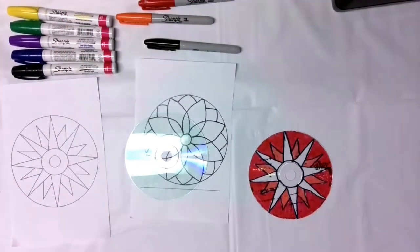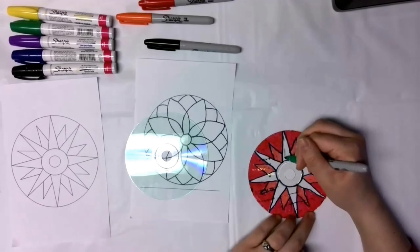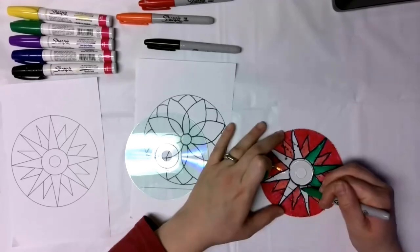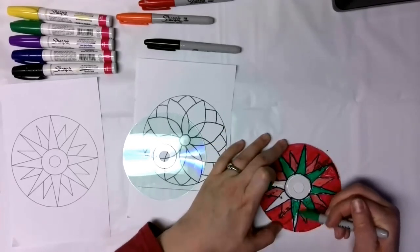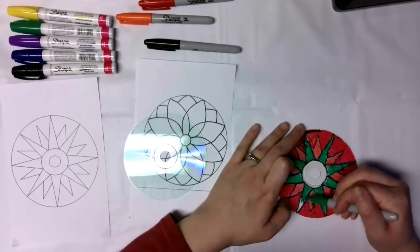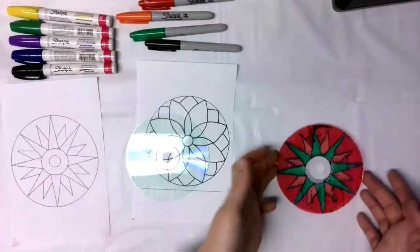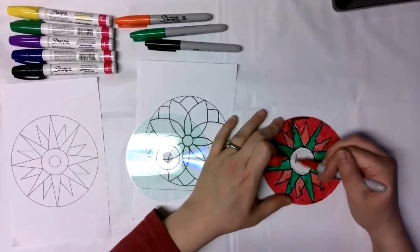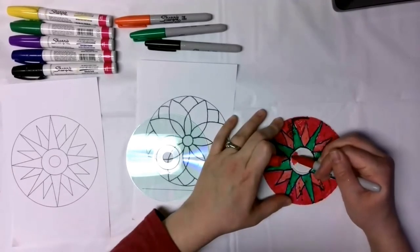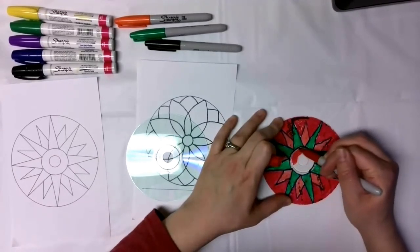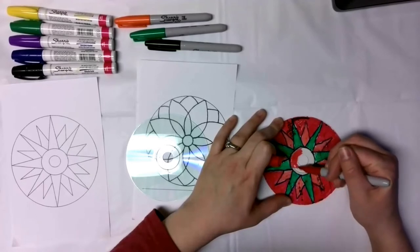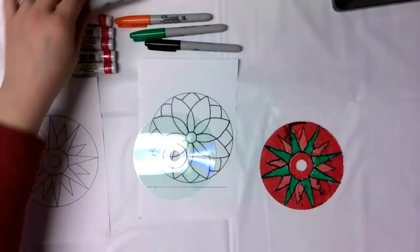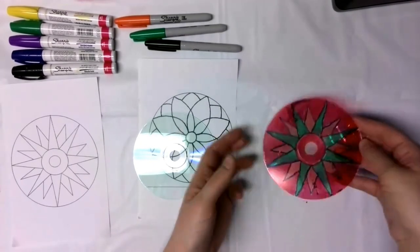All right. And our final color of blue. All right. So that's almost done. What I'm going to do, so because we have this blank middle bit, I'm just going to color it in the red. Kind of just tie all the colors together.